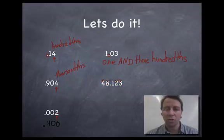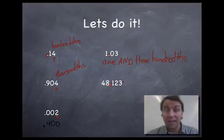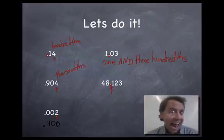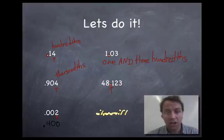All right. Found my decimal points. It's a mixed number. So I read the whole number and the decimal separately. Forty-eight. What do I say when I see the decimal point? Forty-eight and. One hundred and twenty-three. And what place value is the final digit in? It's in the thousandths place. So this is read forty-eight and one hundred and twenty-three thousandths. All right. Let's do one more.